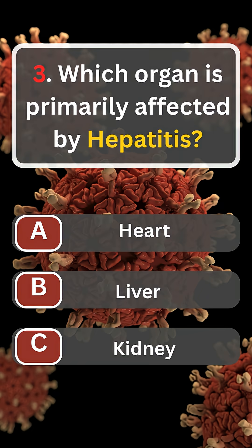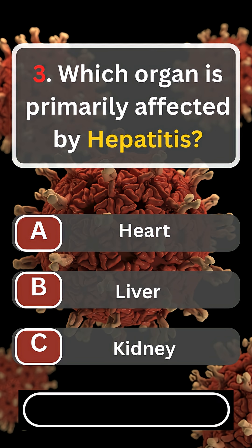Question number three. Which organ is primarily affected by hepatitis? A. Heart. B. Liver. C. Kidney.